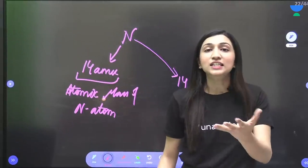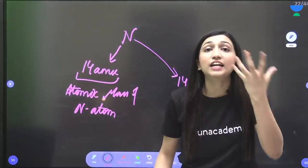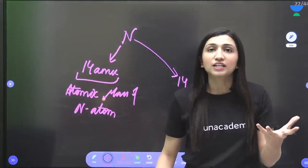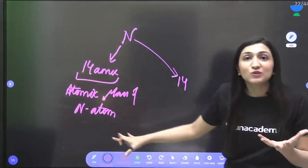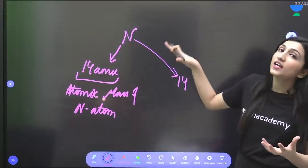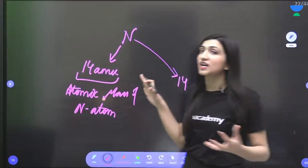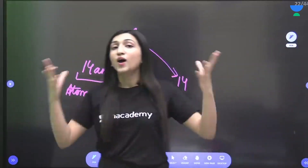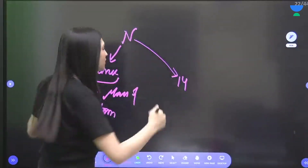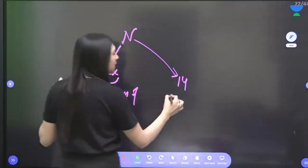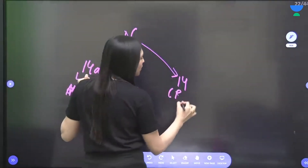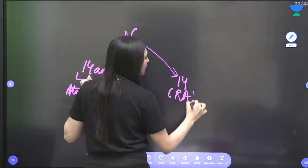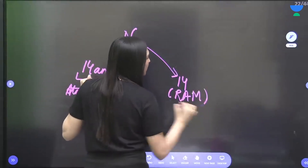This is relative atomic mass. This is nitrogen's relative atomic mass, with no units. This is your relative atomic mass.